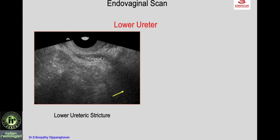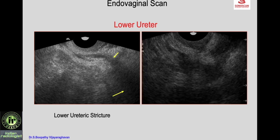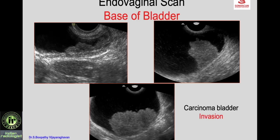Another example is a lower ureteric stricture — you see the dilated ureter and smooth narrowing of the distal-most ureter indicating stricture. Whereas in another case, the dilated ureter with an irregular mass filling the distal-most ureter indicates a lower ureteric tumor or carcinoma.